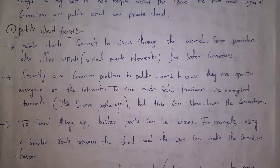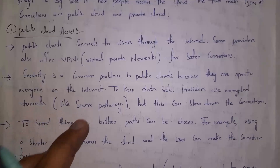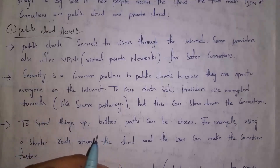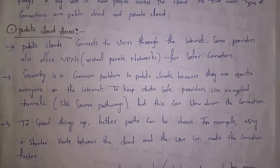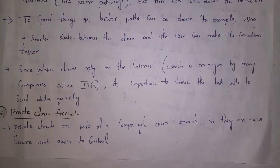Since everyone can use the public cloud by using the internet, there will be security concerns. So in order to keep our data safe, providers must use encrypted tunnels — secure pathways to protect our data — but this process can slow down the cloud connection. To speed things up, providers must choose better, shorter paths between the cloud and the user. Public cloud completely depends on the internet, and these clouds are managed by service providers.